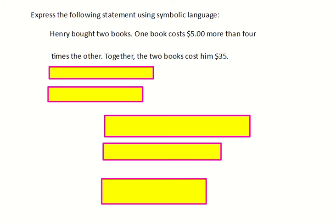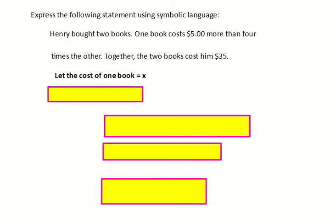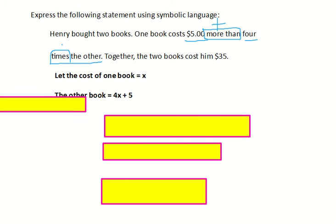We're going to let one of the books equal x. Let the cost of one book equal x. Then using the second statement, let's describe the cost of the other book. 'More than' means to add, so we're going to add five to four times the other. Times means to multiply — we'll use a dot for multiplication. So you have four times x and then add five. The other book will be four x plus five.